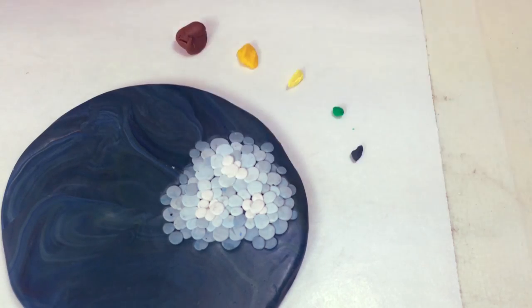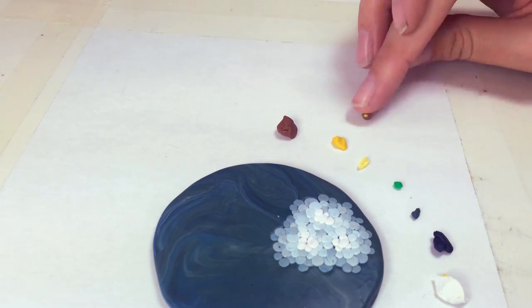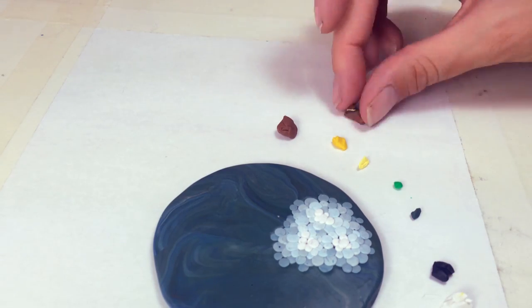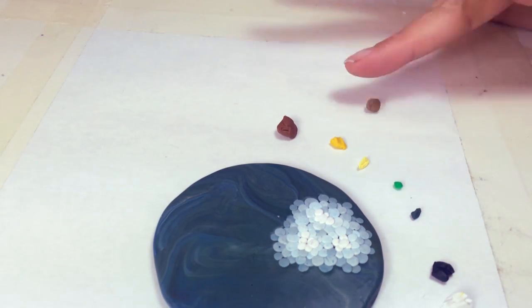So I'm going to add a couple mallard ducks to the coaster. And first, I mix the colors for the head and the body of the female mallard. I use a raw sienna, cadmium yellow, black and white. And I don't mix it all the way, because I want some streaks to represent the feather patterns.